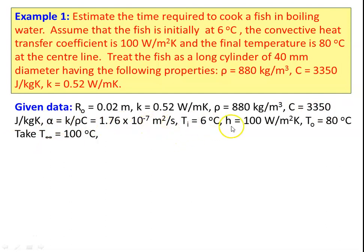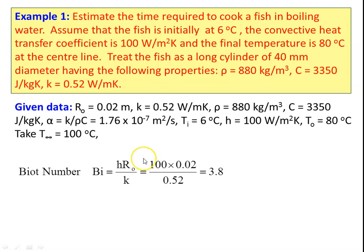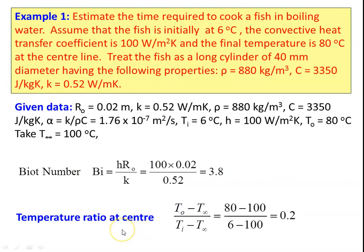Alpha α = K/(ρ·C) = 1.76 × 10⁻⁷ m²/s. Initial temperature Tᵢ = 60°C, heat transfer coefficient H = 100 W/m²·K, centerline temperature T₀ = 80°C, and fluid temperature T∞ = 100°C (boiling water). Biot number Bi = H·R₀/K = 100 × 0.02 / 0.52 = 3.8. The temperature ratio at the center: (T₀ − T∞)/(Tᵢ − T∞) = (80 − 100)/(60 − 100) = 0.2.